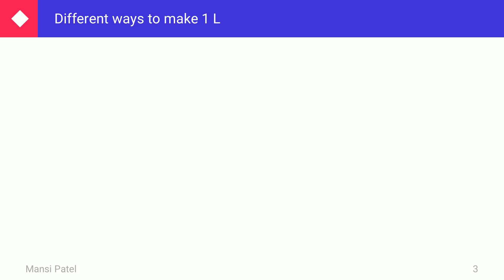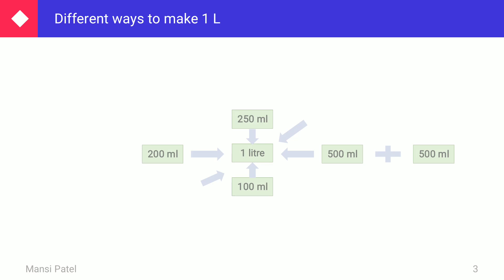Now we have to find different ways to make one liter. As we already know, one liter is equal to 1000 ml. If there is 200 ml, what should be added to complete one liter? Since 1000 ml equals 1 liter, we subtract: 1000 minus 200 gives 800 ml. So 800 ml plus 200 ml is equal to 1 liter.